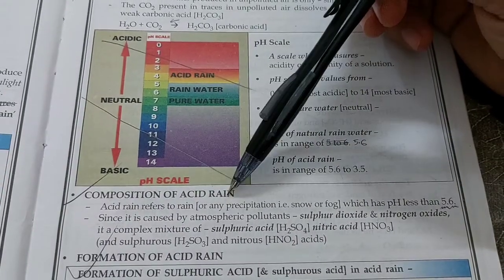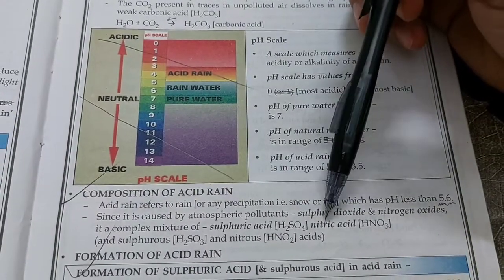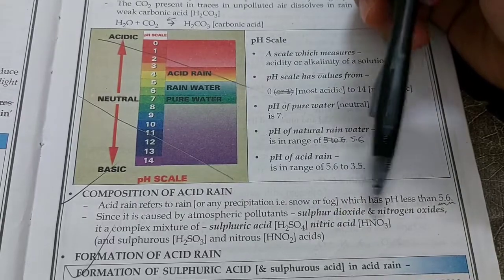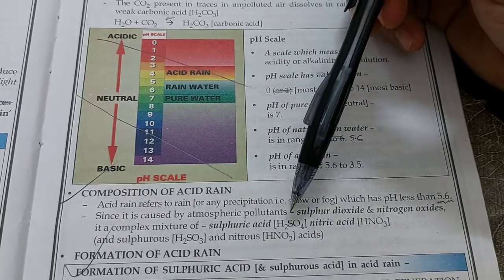Composition of acid rain: it contains acids because of the gases released. We can list four acids here: carbonic acid was already present in every rain, not just acid rain.